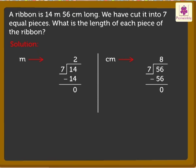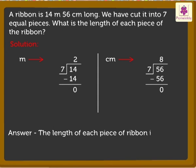We found the answer. Thus, the length of each piece of ribbon is 2 meters 8 centimeters.